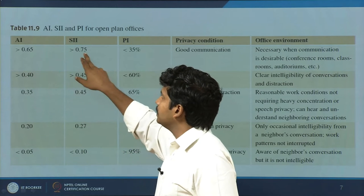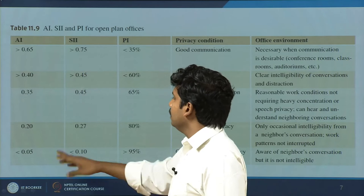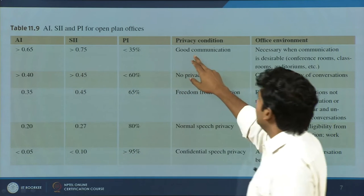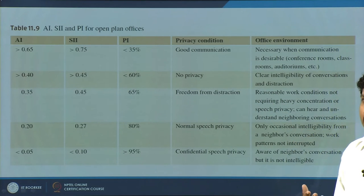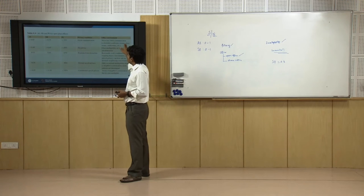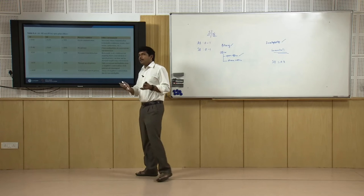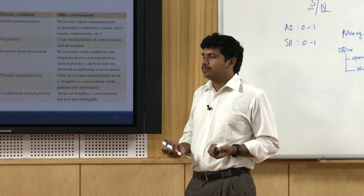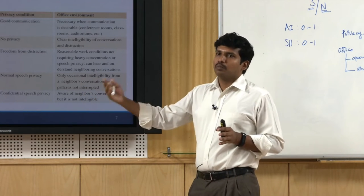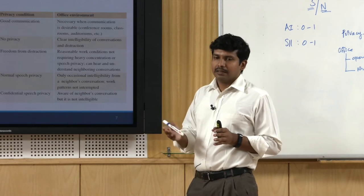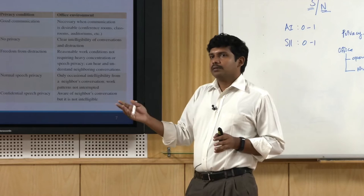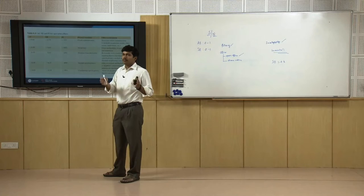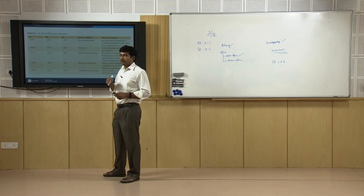Speech intelligibility index will be slightly higher than articulation index numerically. If speech intelligibility is above 0.65–0.75, it means good communication — whatever is spoken is being understood by the other side. This is necessary when communication is desirable, such as in a conference room where interpersonal conversations need to be understood well. Between a conference room and a neighbouring room or open office, you need speech privacy so that conversations are not overheard or one is not disturbed by the other.